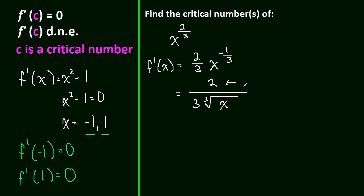That means this function will never be equal to 0, but we can find when this derivative does not exist, right? It doesn't exist if we plug x equals 0 in. If x is equal to 0, then we're going to get 2 divided by 0, which of course is undefined. So, x equals 0 means that this derivative doesn't exist, so x equals 0 is our only critical number.